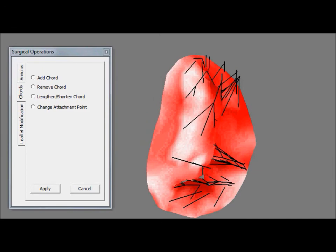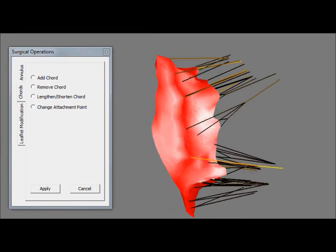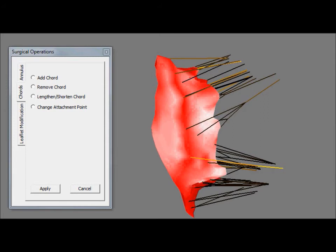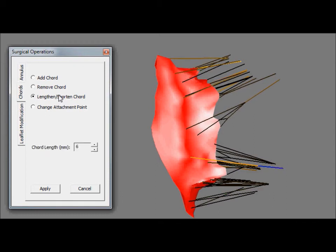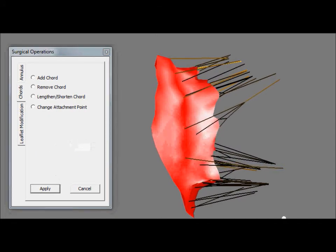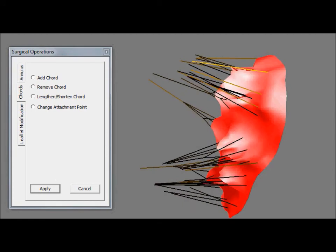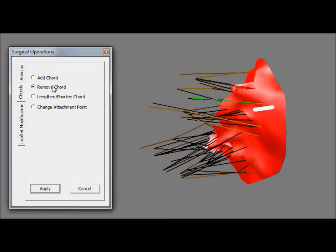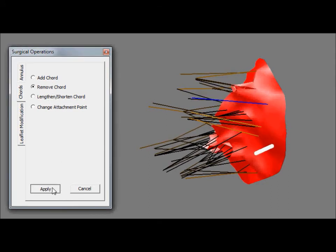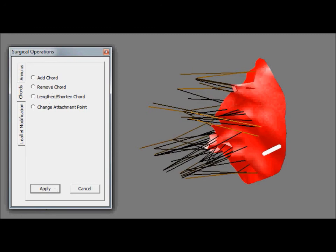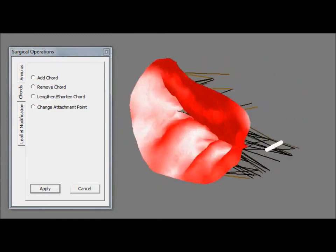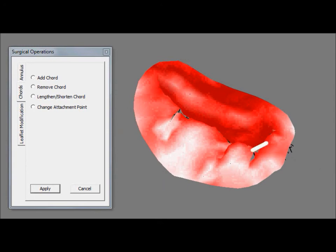Another benefit of virtualization is the ability to highlight the cords experiencing the greatest stress. We select one such cord and decide to lengthen it. The change in valve shape is immediate. Another cord is excised. Nevertheless, regurgitation still persists.